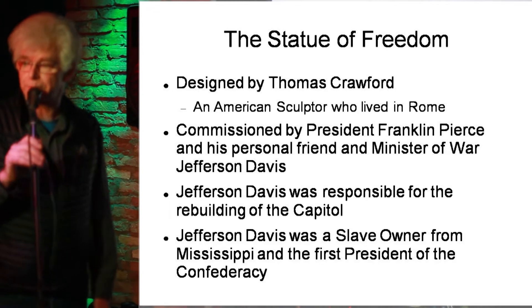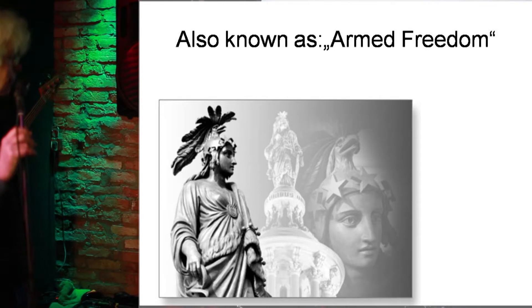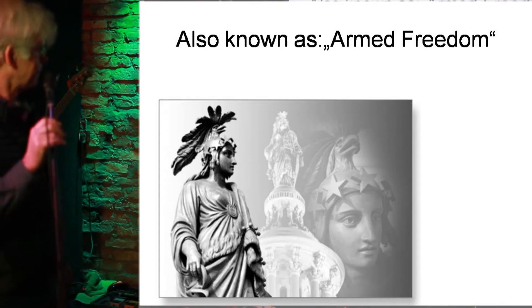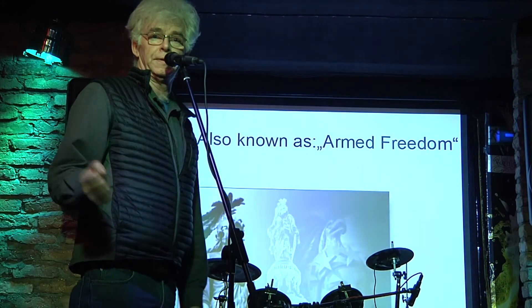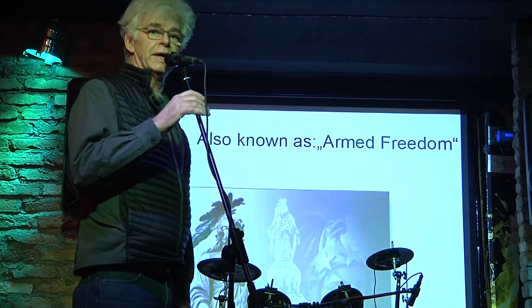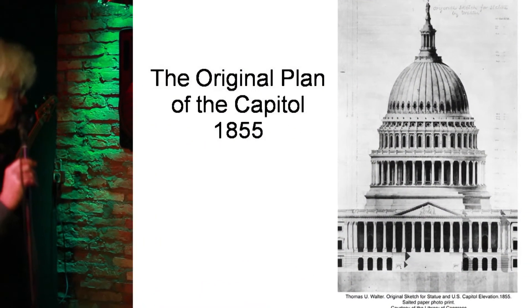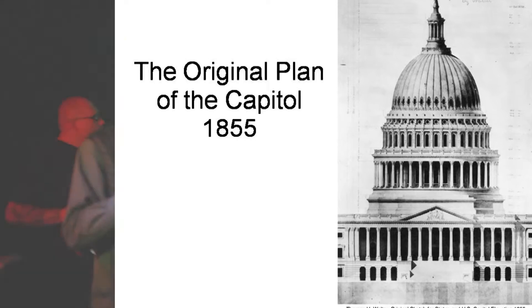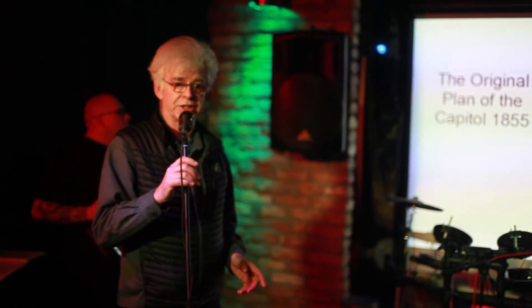Jefferson Davis did not like the first plan that was made for the Statue of Freedom. The Statue of Freedom was also known as Armed Freedom — she has a sword and she's supposed to defend the United States. This is the original plan of the Capitol, built at that time, and way on top of this dome, which was supposed to represent the planet Earth, is the Statue of Freedom — the highest point in the city of Washington, D.C.